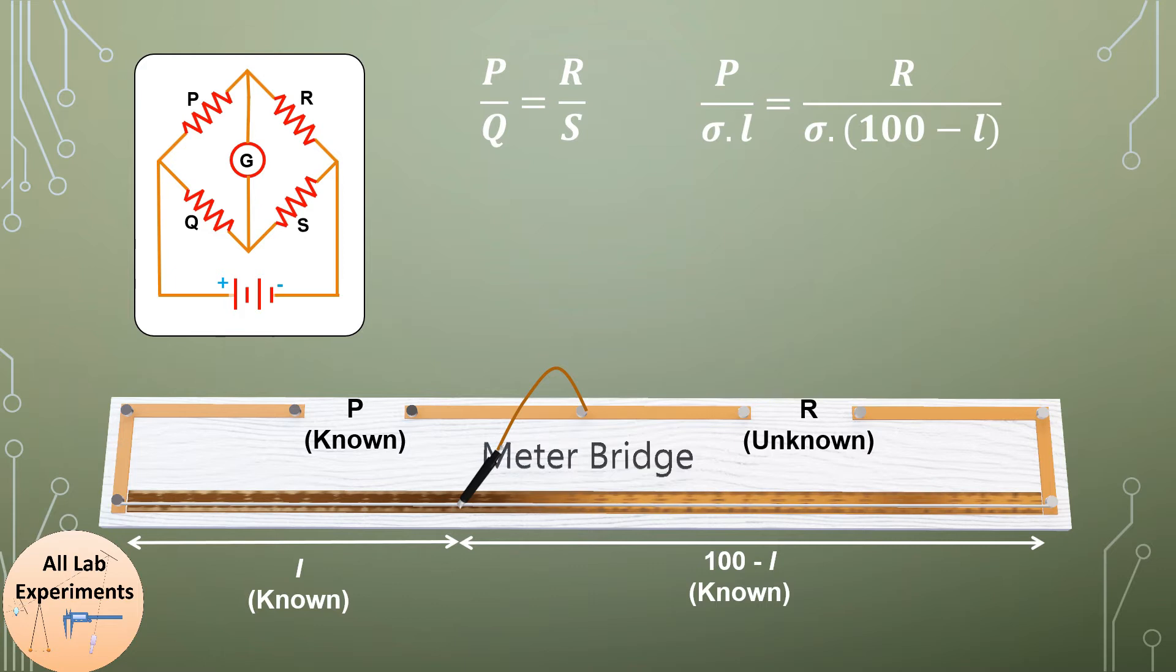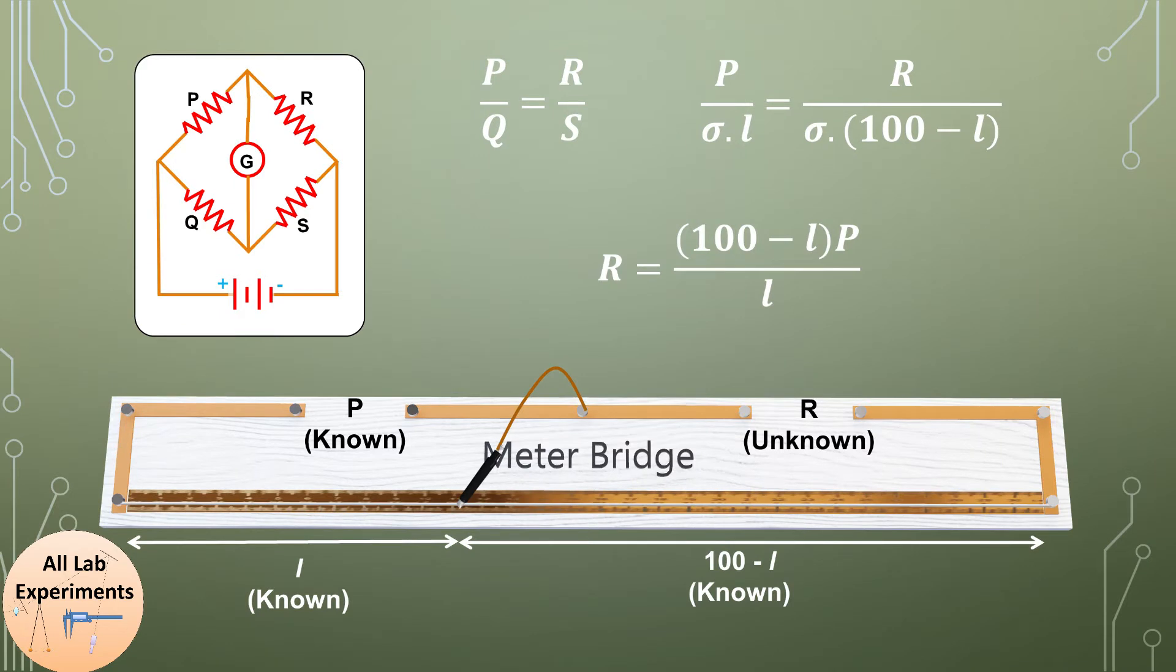Sigma is the resistance per unit length of this wire and L is the length of the wire, so all together they make the resistance of this piece of wire. Sigma times 100 minus L is the resistance of the other part of the wire. From this expression we get the value of this unknown resistor R.